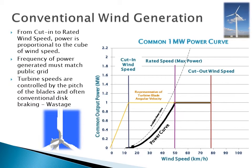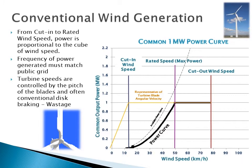Shown here is a power curve of a conventional 1 megawatt wind turbine. The possible power production is represented by the bold black line and is proportional to the cube of the wind speed. For example, there is roughly 15 times more power available at wind speeds of 50 km/h than there is at 15 km/h. Also note the yellow line, which shows a representation of the rotational speed of the turbine blades over the range of wind speeds.